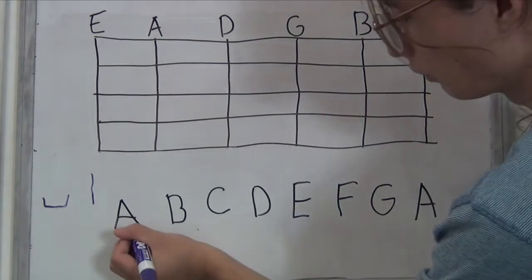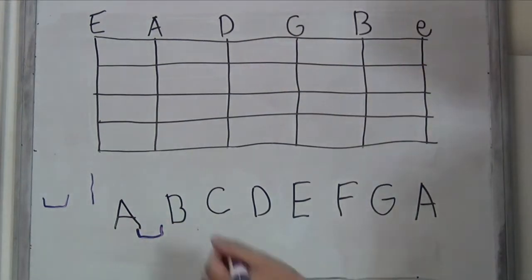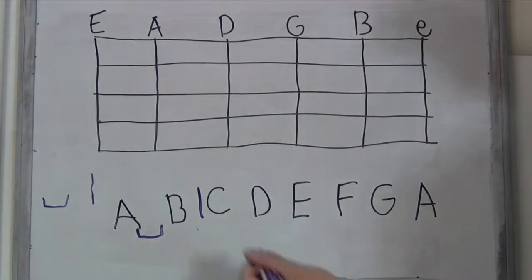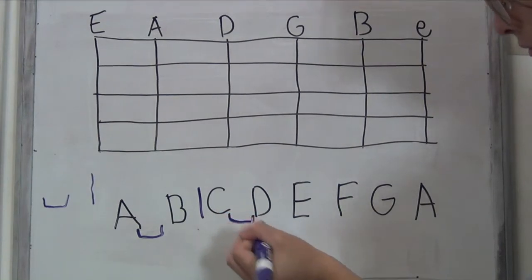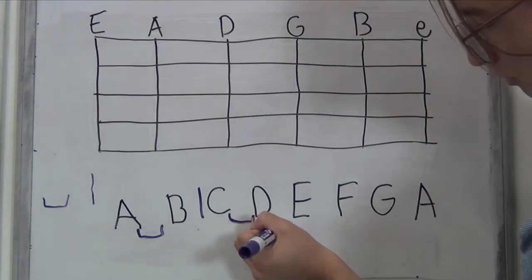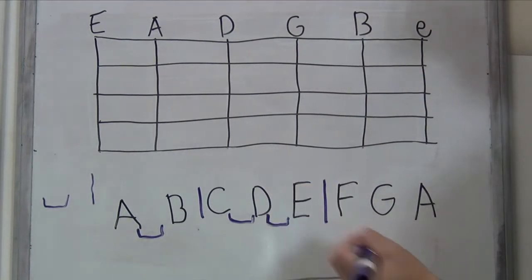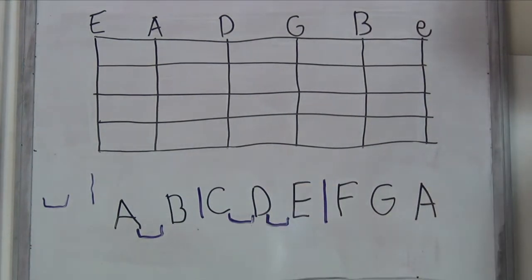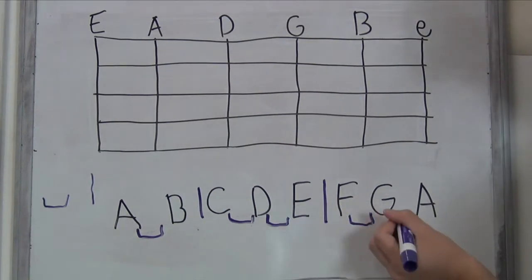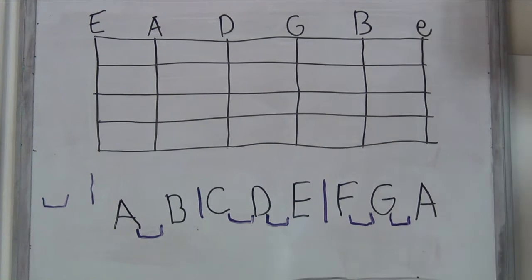From A to B we have a whole step. From B to C we have a half step. C to D is a whole step. D to E is another whole step. E to F is a half step. F to G is a whole step. And G to A, because it loops here, is another whole step.